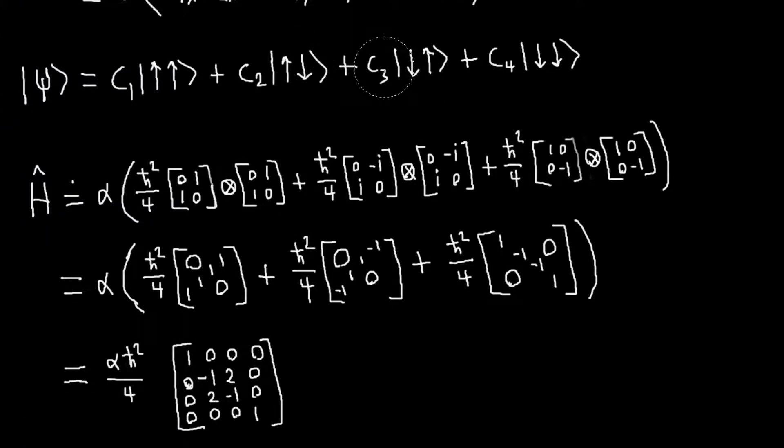These two vectors are not eigenvectors, but some linear combination of them will be eigenvectors. So our problem is reduced to, instead of finding, if all of these weren't eigenvectors, then in general the eigenvectors would be some linear combination of all of these.